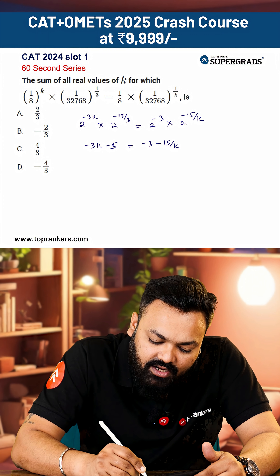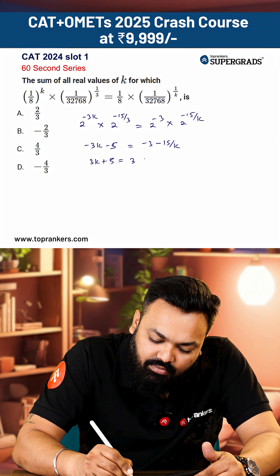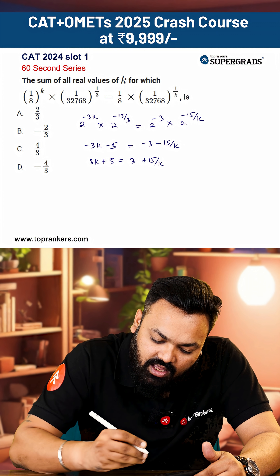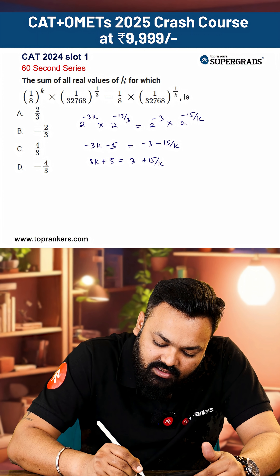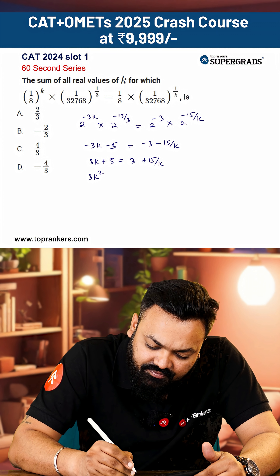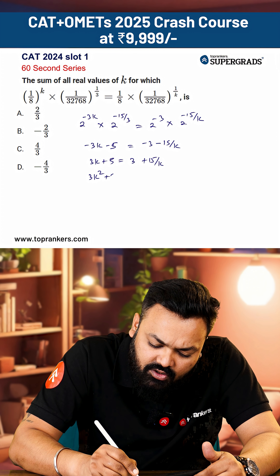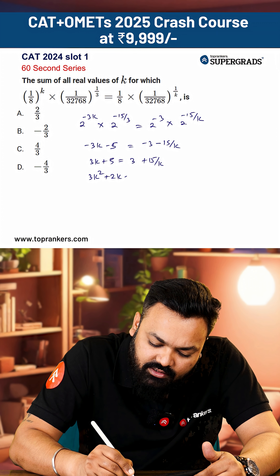Taking minus common, 3k plus 5 equals 3 plus 15 upon k. Multiplying through, this gives 3k squared plus 2k minus 15 equals 0.